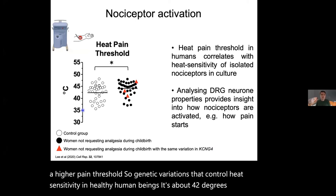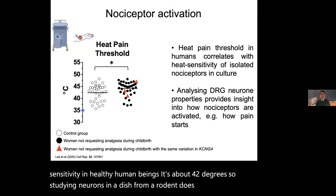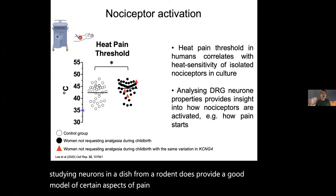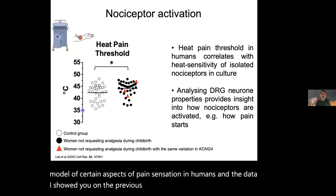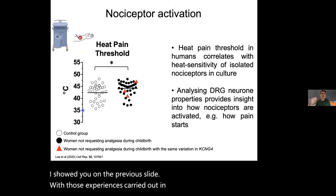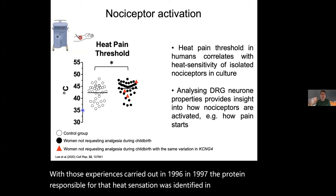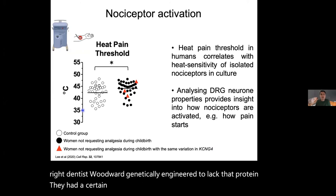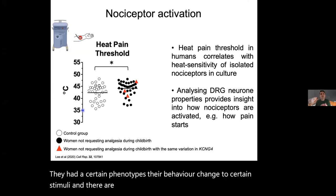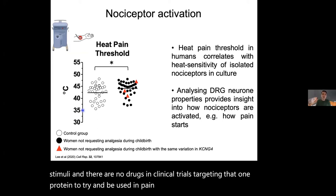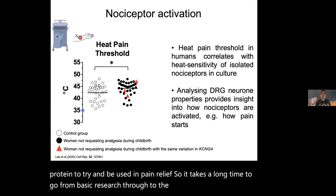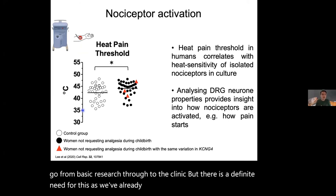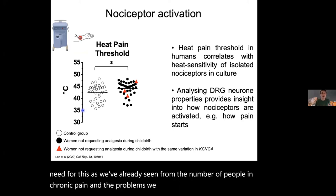Studying neurons in a dish from a rodent does provide a good model of pain sensation in humans. The data I showed was from 1996; in 1997 the protein responsible for heat sensation was identified; in 2000 mice were genetically engineered to lack that protein and showed changed behaviour. There are now drugs in clinical trials targeting that one protein for pain relief. It takes a long time to go from basic research to the clinic, but there is a definite need given the number of people in chronic pain with inadequate pain relief.